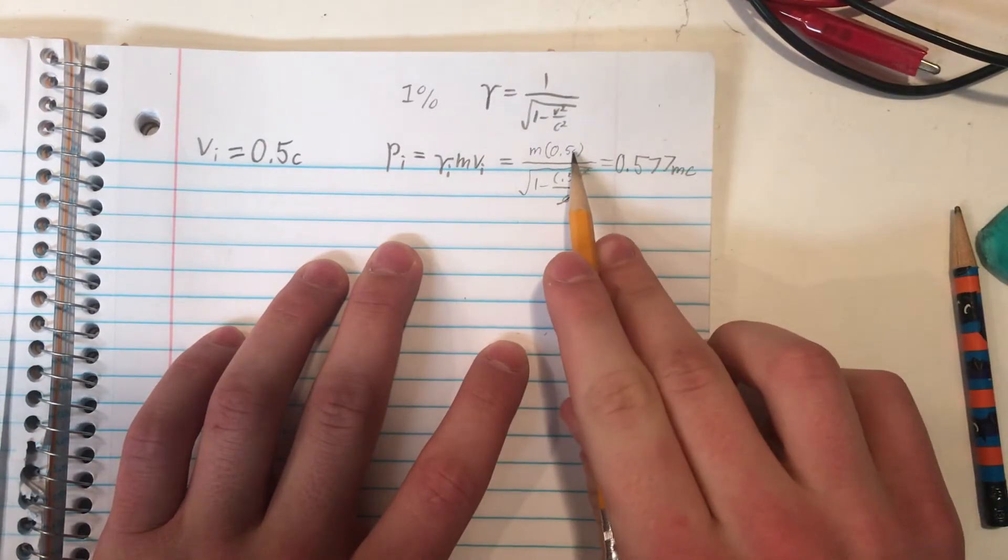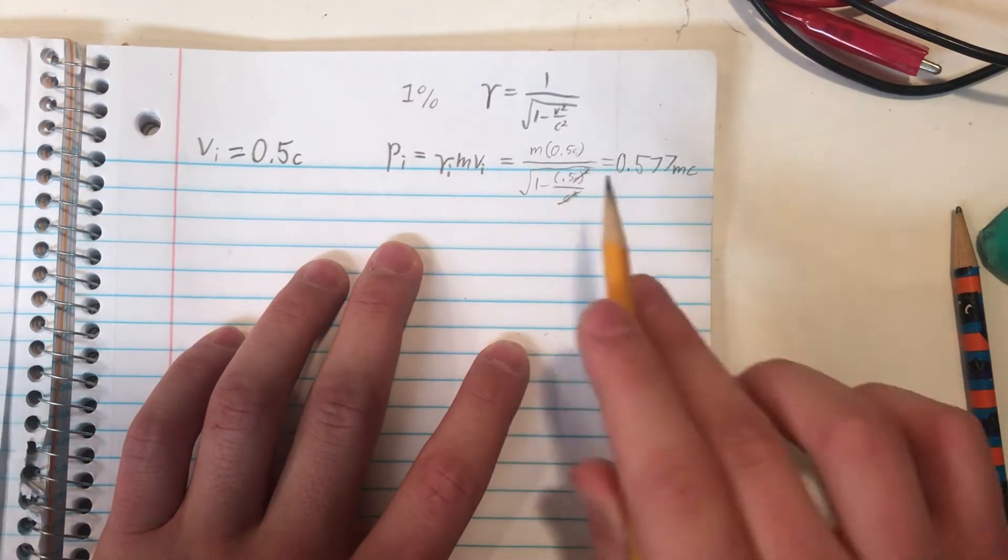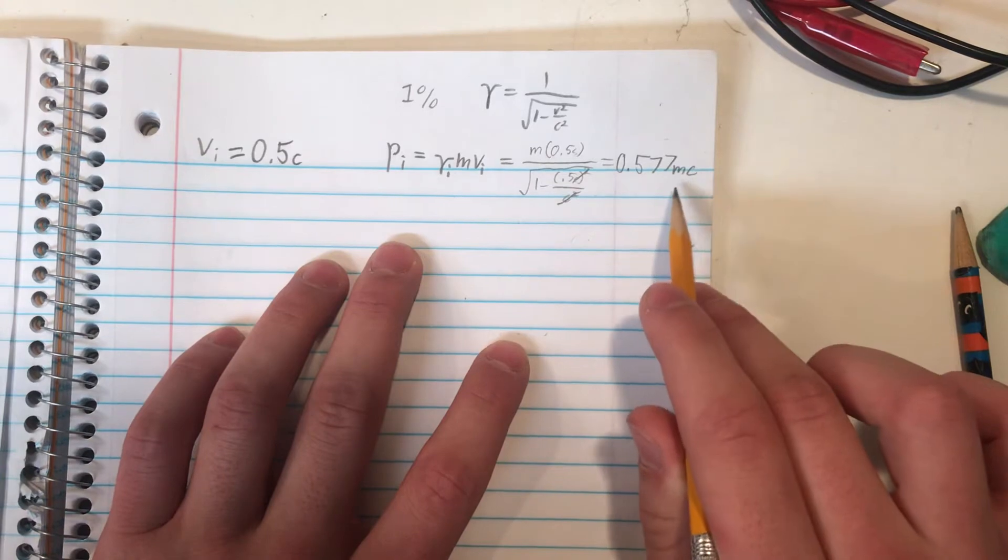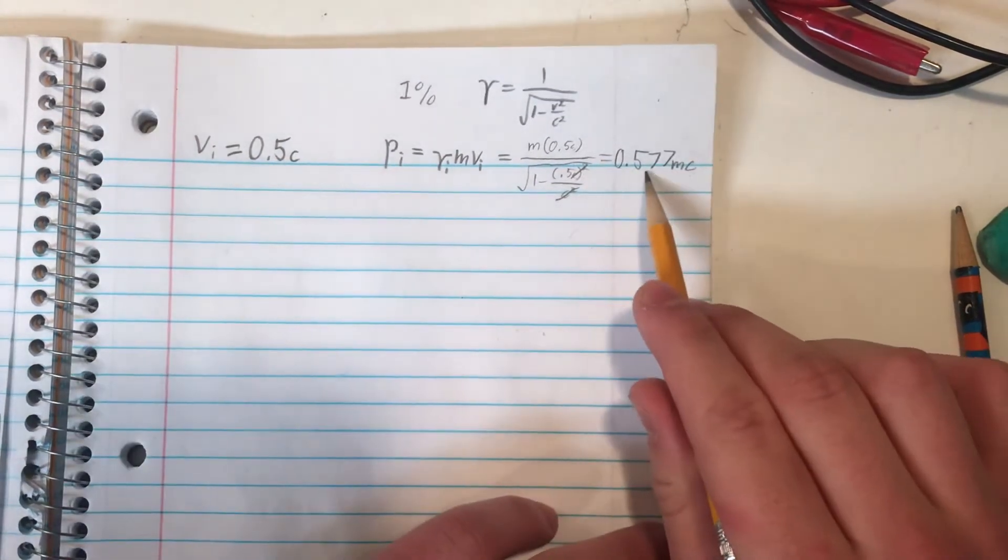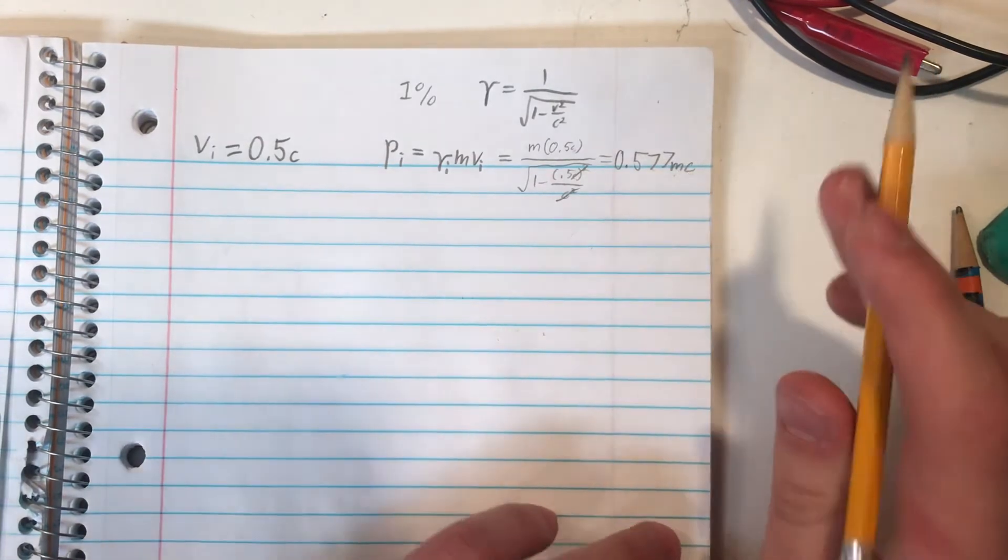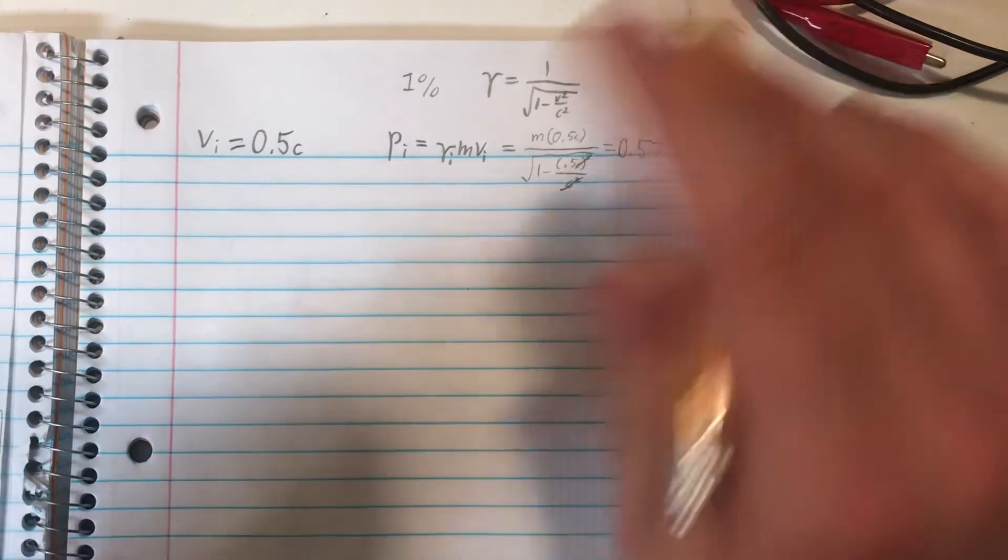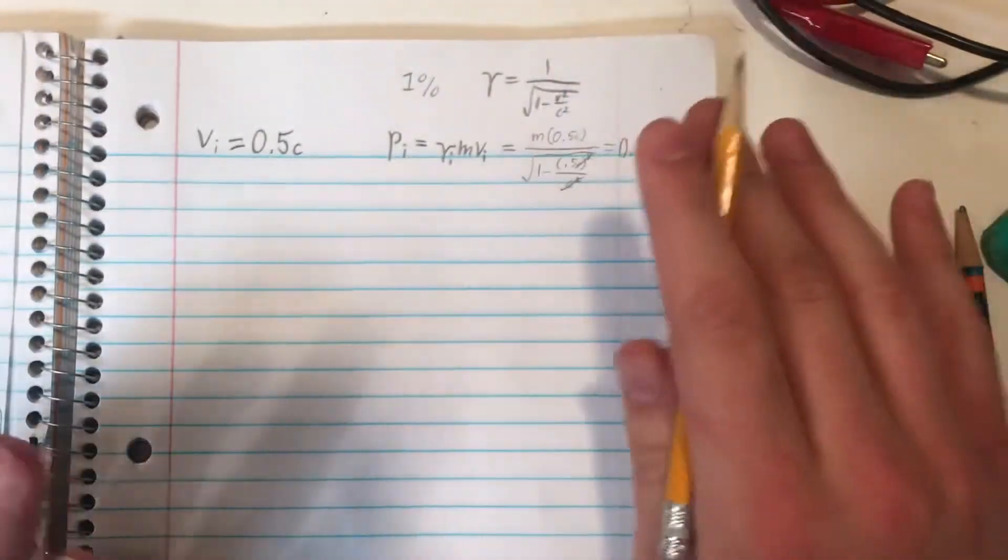I did not include the speed of light, c, in my calculations here, because when we give our final answer, we will likely want to include our answer in terms of c. So it's 0.577 times the mass, which is unknown, times c. But now we still haven't even begun to actually answer the problem yet, so let's reconsider what the problem's asking.